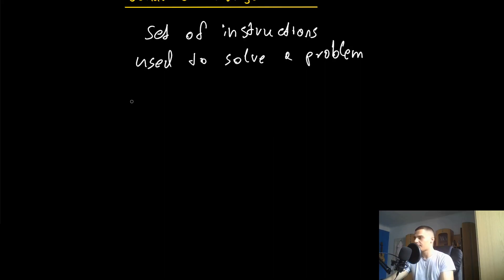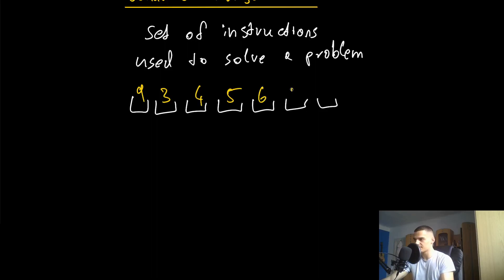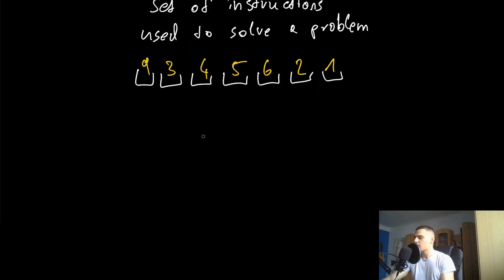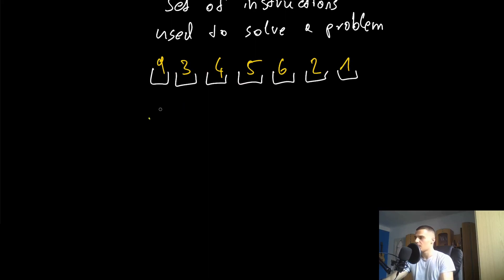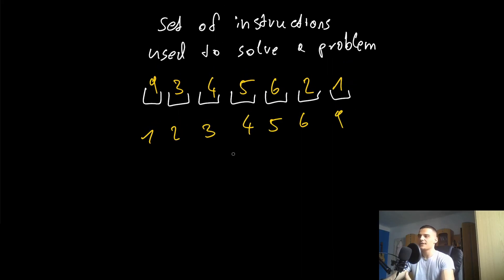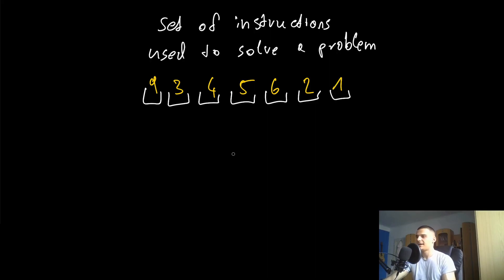Let's get an example of sorting a list. Let's say you have the numbers 9, 3, 4, 5, 6, 2, and 1. What we want to do is end up with a sorted list. As a human it's very easy to see: it's just 1, 2, 3, 4, 5, 6, and 9. But a computer doesn't have that big-picture understanding — it can't just look at the whole list and say 'I know how to sort it.' A computer doesn't have intuition, at least not yet. So it has to use a static set of instructions to solve the problem of sorting a list.